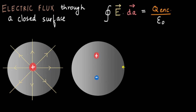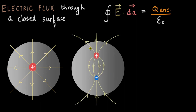The electric flux in this case would be zero because the enclosed charge comes out to be zero — you have a plus Q and a minus Q. Even if we look at the field lines, we can see that the number of field lines leaving the surface equals the number entering the surface from the other side. So no matter where you place your electric dipole inside the sphere, your flux will always come out to be zero.